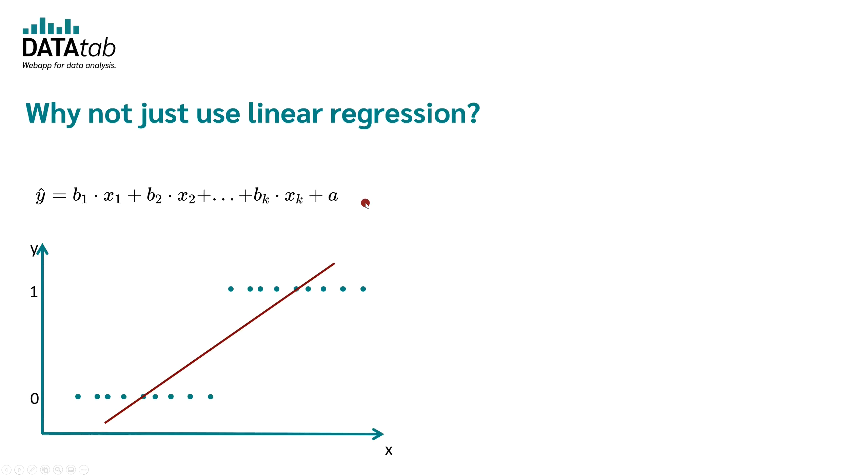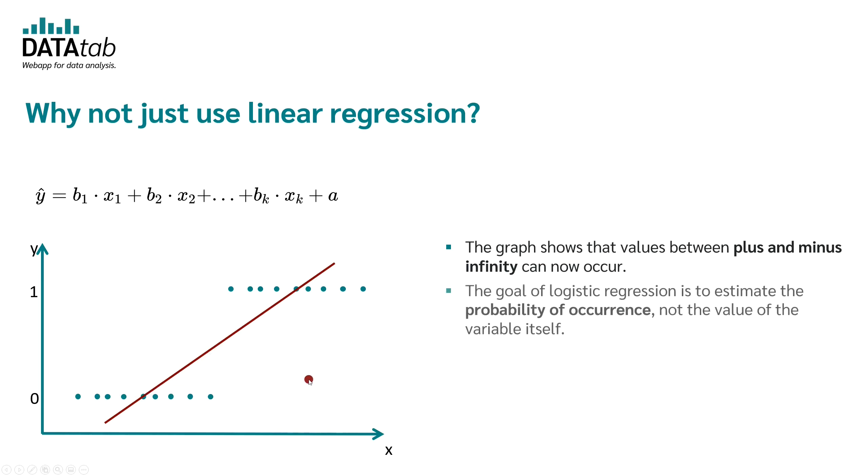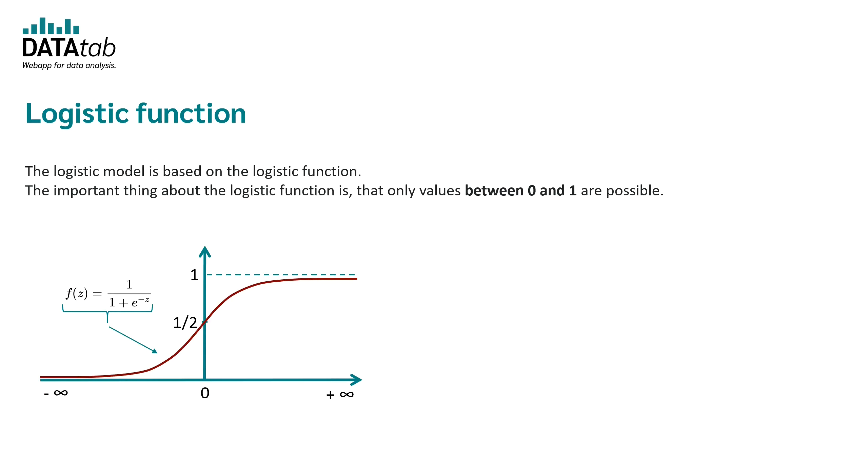So the question now is, why can we not just use a linear regression? A linear regression would just draw a straight line through the data points. The graph shows that values between plus and minus infinity can occur. The goal of logistic regression is to estimate the probability of occurrence, not the value of the variable itself. The range of values for the prediction is restricted to the range between 0 and 1. Since only values between 0 and 1 are possible, the logistic function f is used.